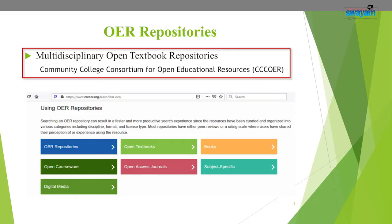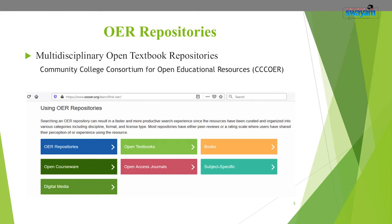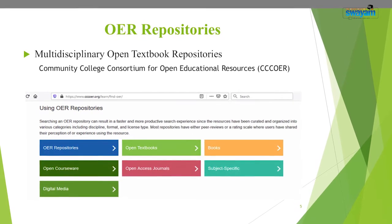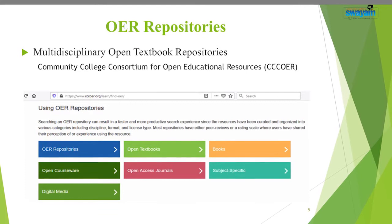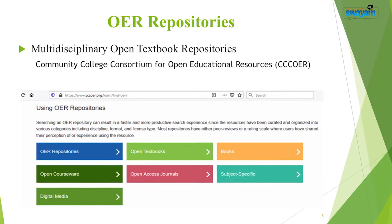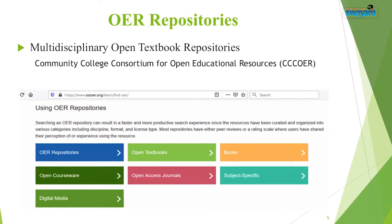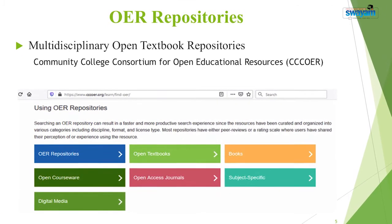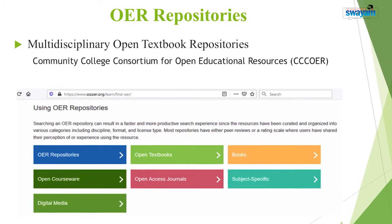One of the most popular is the multidisciplinary open textbook repository offered by the Community College Consortium for Open Educational Resources, popularly called CCCOER. It promotes the awareness and adoption of open education policies, practices, and resources, and is a growing consortium of community and technical colleges committed to expanding access to education through adoption of OER policy, practices, and resources.